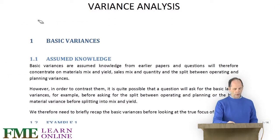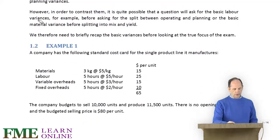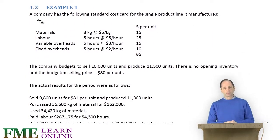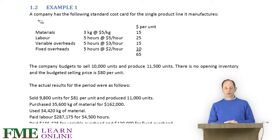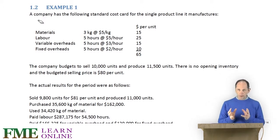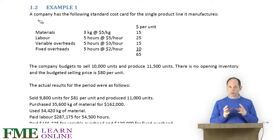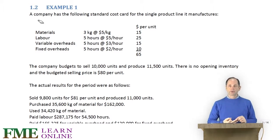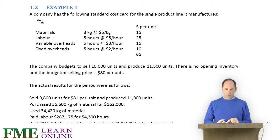We're going to take one example which has some information about a standard cost card and the actual results, and we're going to do all of the variances. Bear in mind that this is a recap — this is assumed knowledge — and the main ones to make sure you're happy with are the labour rate and efficiency variances, the material usage and price variances, and the sales volume variance.